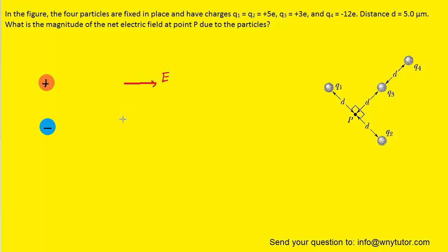On the other hand, negative charges produce electric fields that point towards the negative charge. So if we were located at this point right here, the electric field would be pointing towards the negative charge. And we can label that E as well.